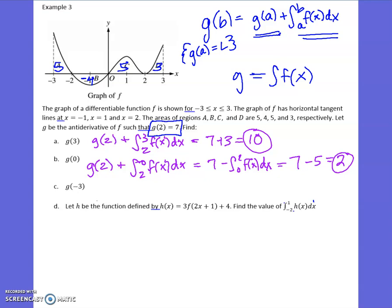And finally, g of negative 3, same deal. I'm going to start with the one I know, and I'm going to go from the one I know to negative 3, the one I want. That, once again, is backwards. g of 2 is still 7, but I have to flip this so that it will be from negative 3 to 2. And now I can do 7 minus, let's see what we get. Negative 3 to 2, all of that is 5 plus negative 4 plus 5. So minus 5 plus negative 4 plus 5, which gives me 10 minus 4, which is 6. So I really have 7 minus 6, or 1.